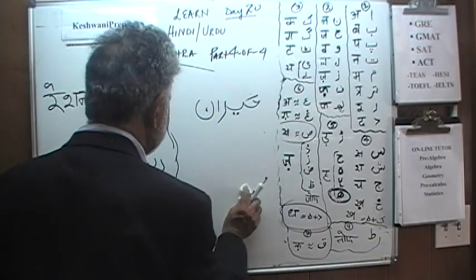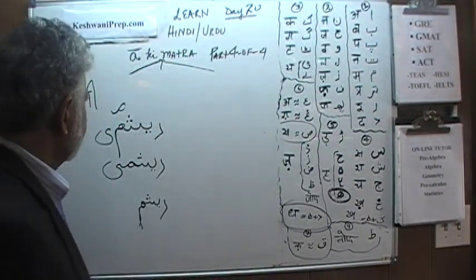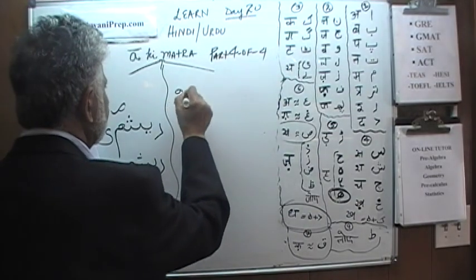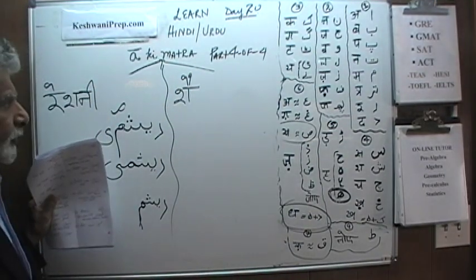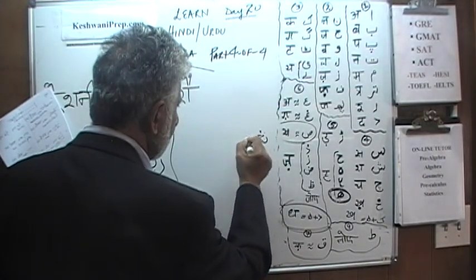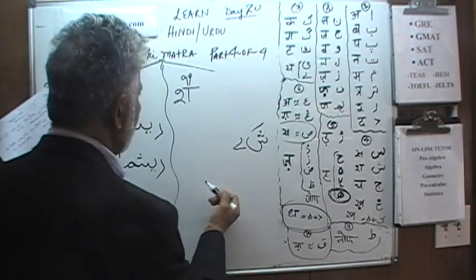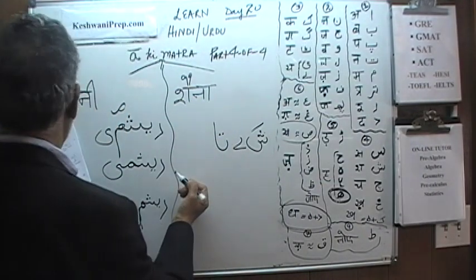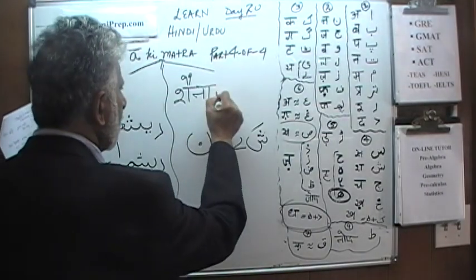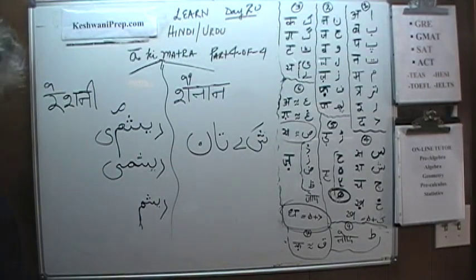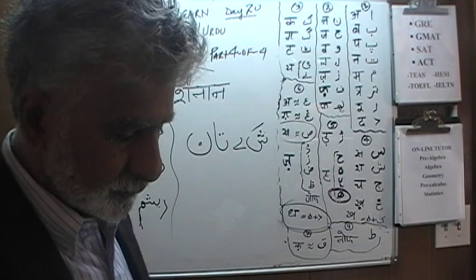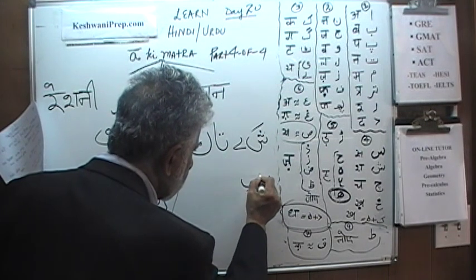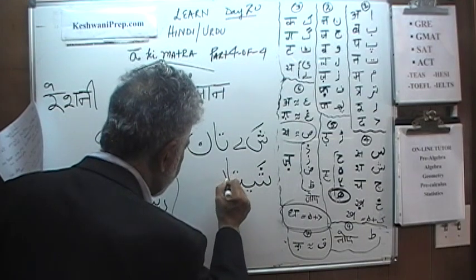Let's do one with the Badi ki matra. 'Shai' — there is your Sheen, joining with the Badi Ye, and it takes a Zabar — 'Shai.' Then we have a Ta, and then a Nun — 'Shaitan.' You know what Shaitan means. Let's put them together: Sheen, Badi Ye, and then a similar RE — 'Shai' — then a Ta and a Nun — 'Shaitan.'